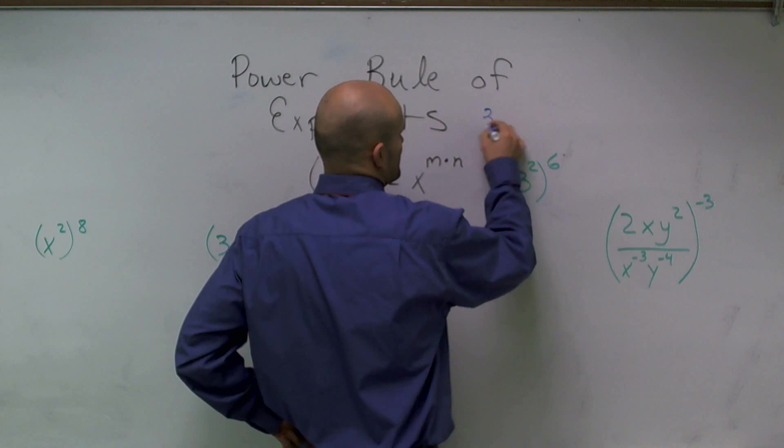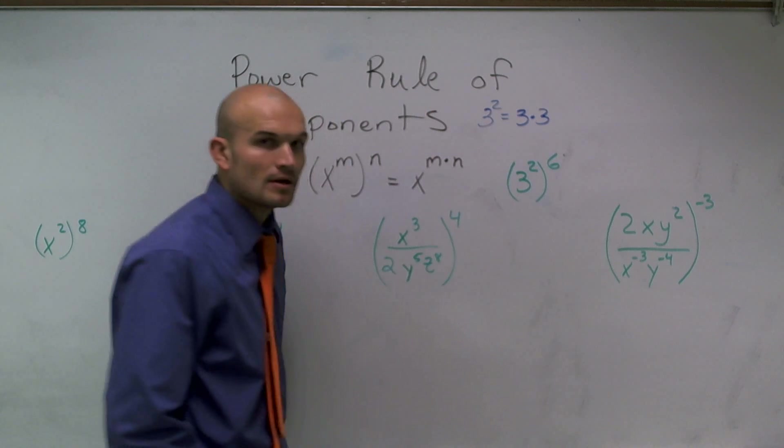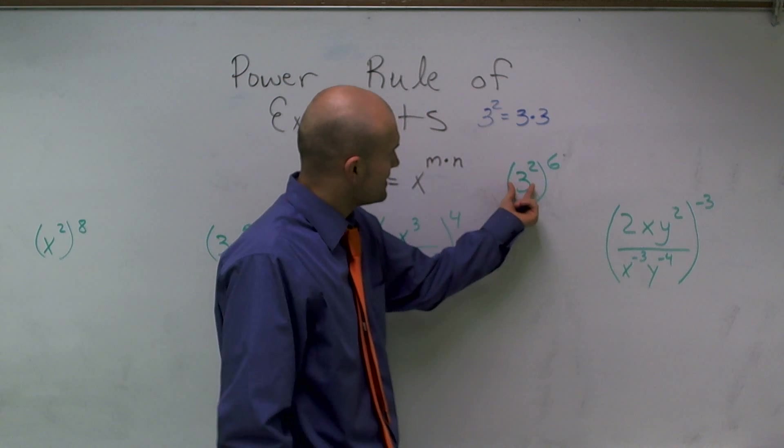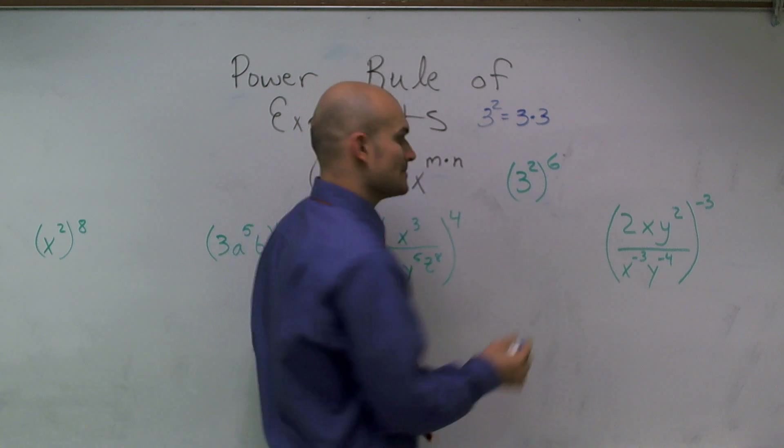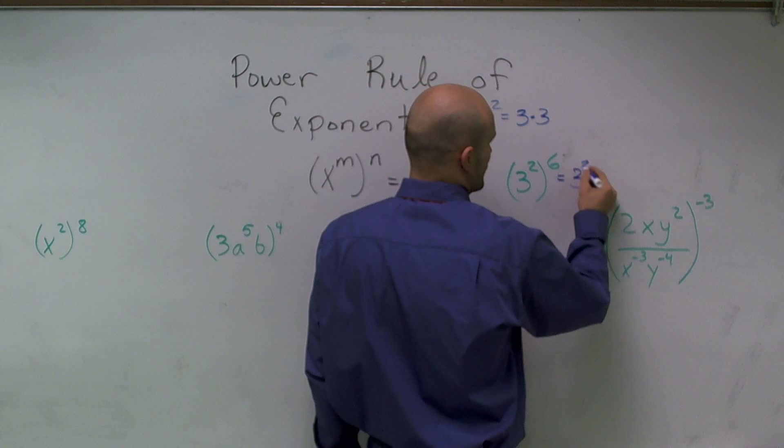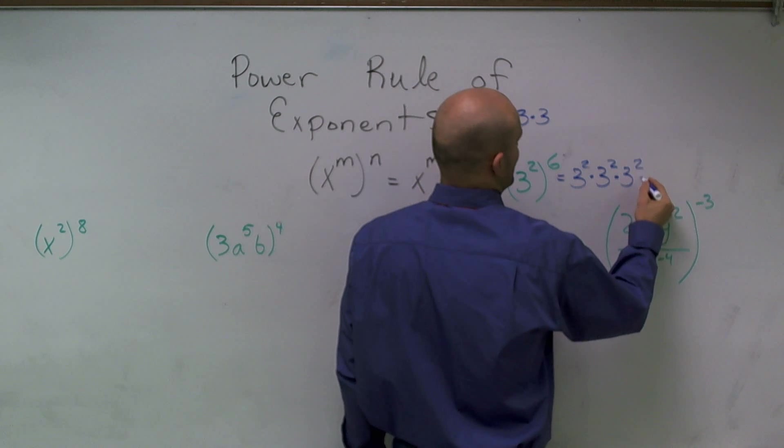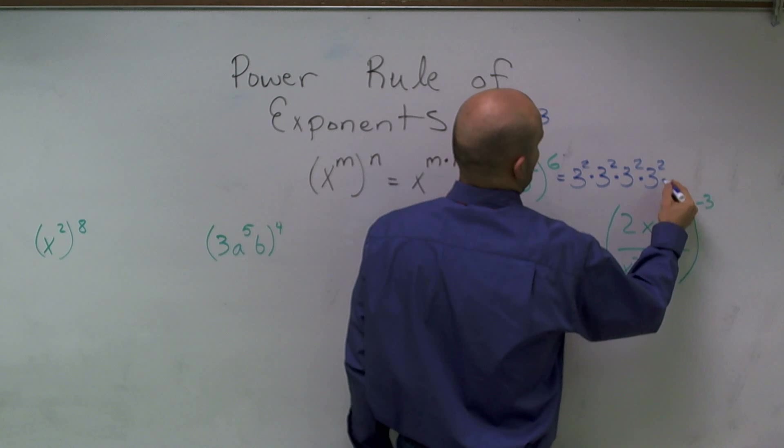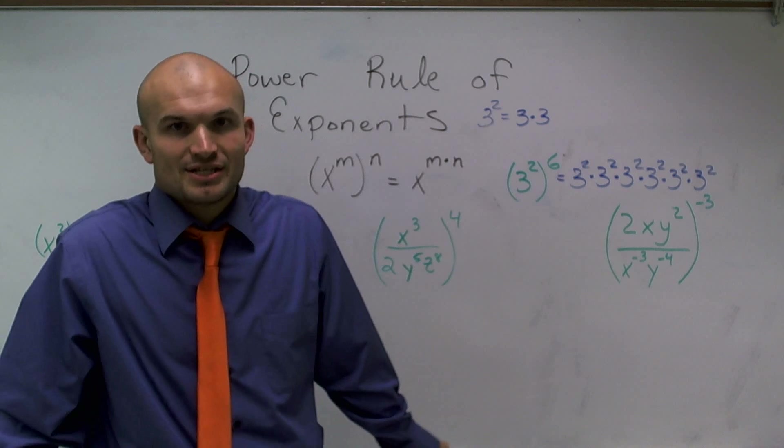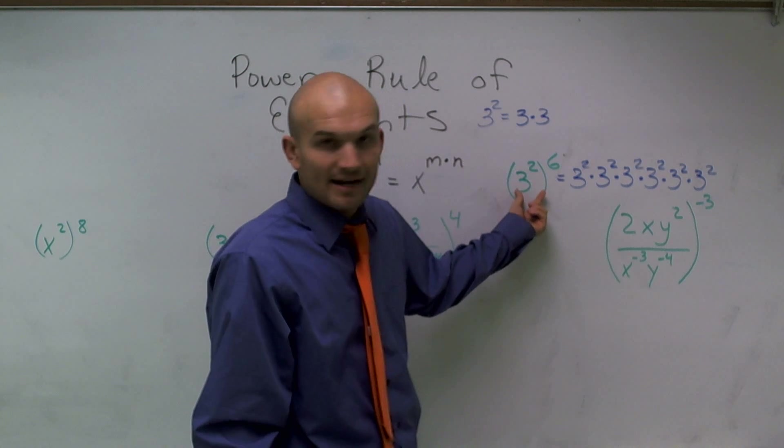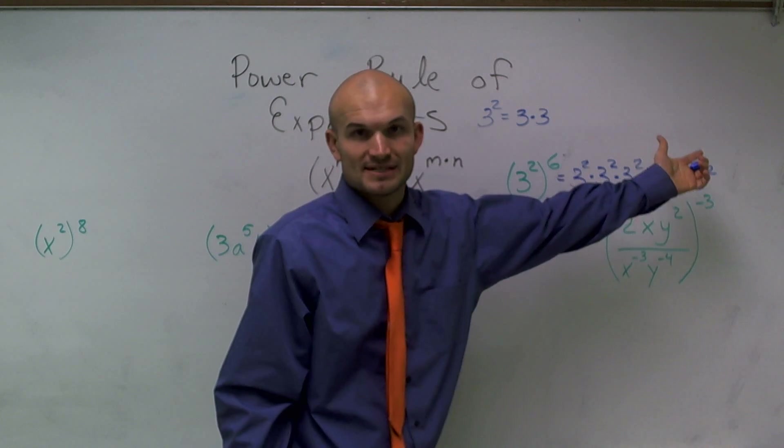We know that 3 squared equals 3 times 3. Well, what happens here is now I'm taking this number and I'm multiplying it by itself six times. So what this means is 3 squared multiplied by 3 squared times 3 squared. You can see the repetition that happens. Whatever's inside of my parentheses, I'm going to multiply it by itself six different times.